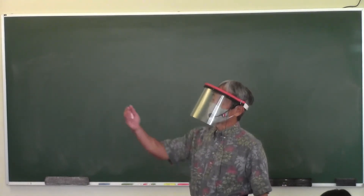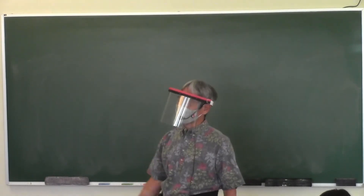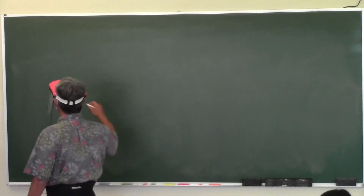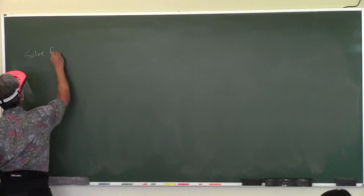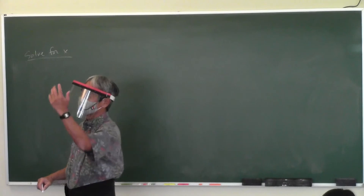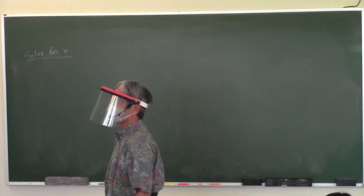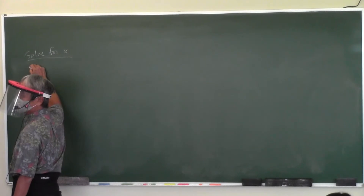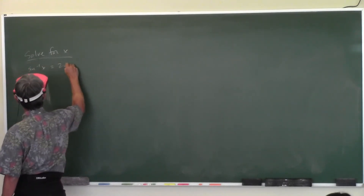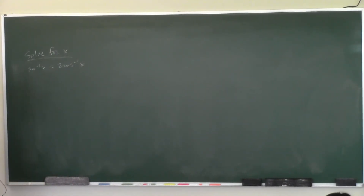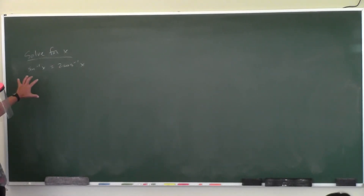We're going to solve equations involving trigonometry and inverse trig functions. I'll do a problem like 1a — the directions are solve for x. I'll put the two on the other side. Before we even start this problem, how many answers should there be? One.